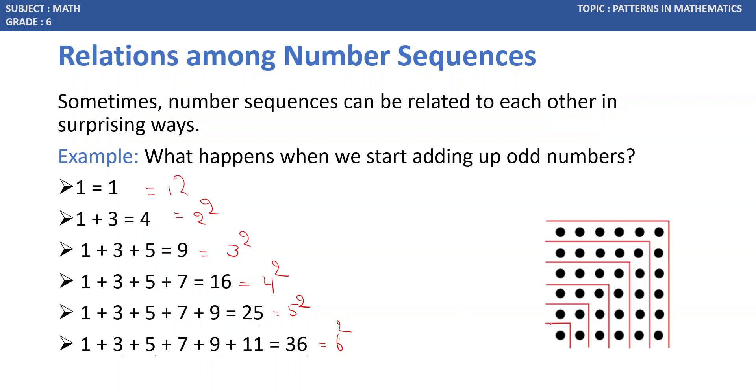Here, if we have a representation of this number sequence, we can do this. 1 is 1. 1 plus 3, where 3 is an odd number. If we represent this in diagrammatic form, it is in the form of a square. Similarly, next one is 1, 2, 3, 4, 5. So 1, 3, 5—when adding 1 plus 3 plus 5, it gives 9. So this is in the form of a 3 by 3 square. Next one will be 4 by 4.